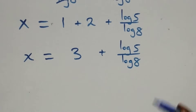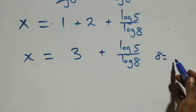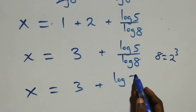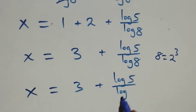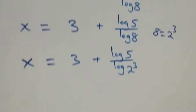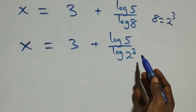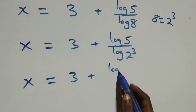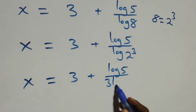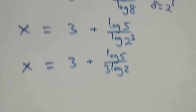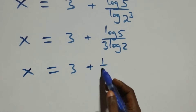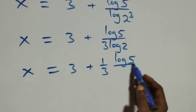We can express 8 as 2 cubed, so log 8 becomes log 2 cubed. Applying the power rule, log 2 cubed equals 3 log 2. Therefore x equals 3 plus log 5 over 3 log 2, which we can also write as x equals 3 plus one third times log 5 over log 2.